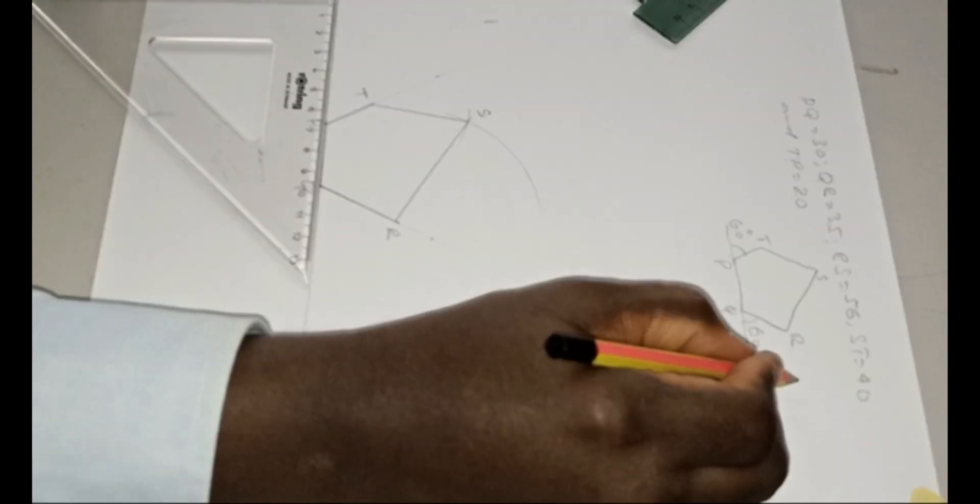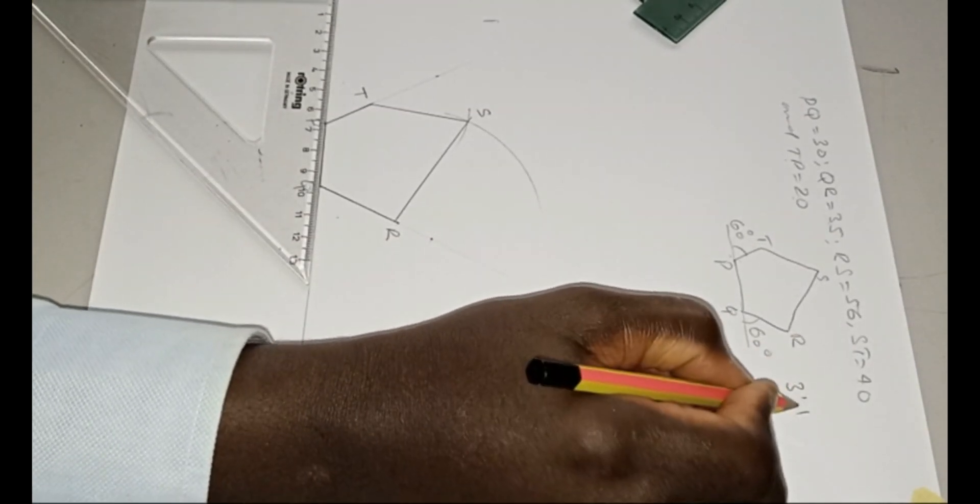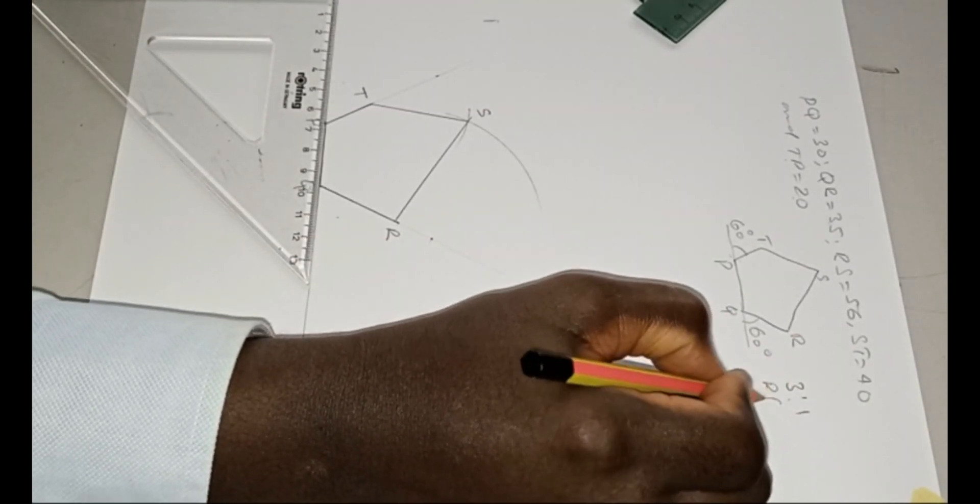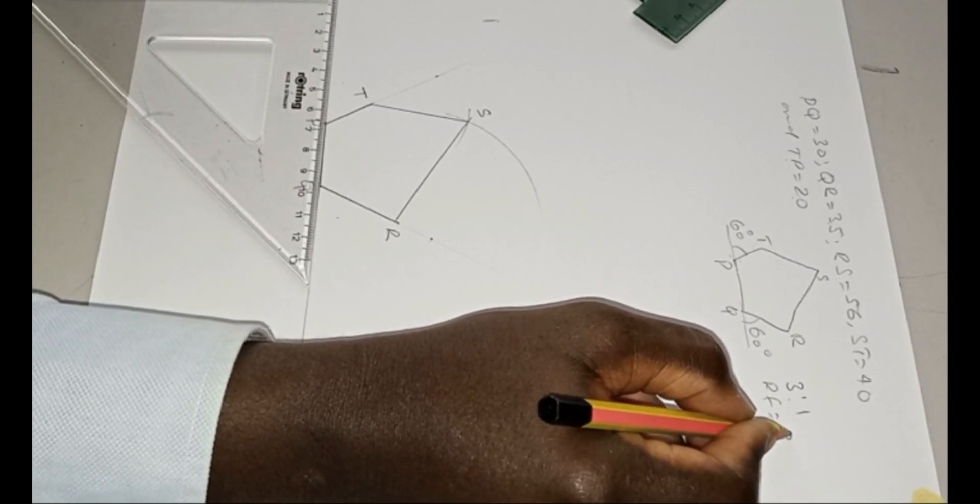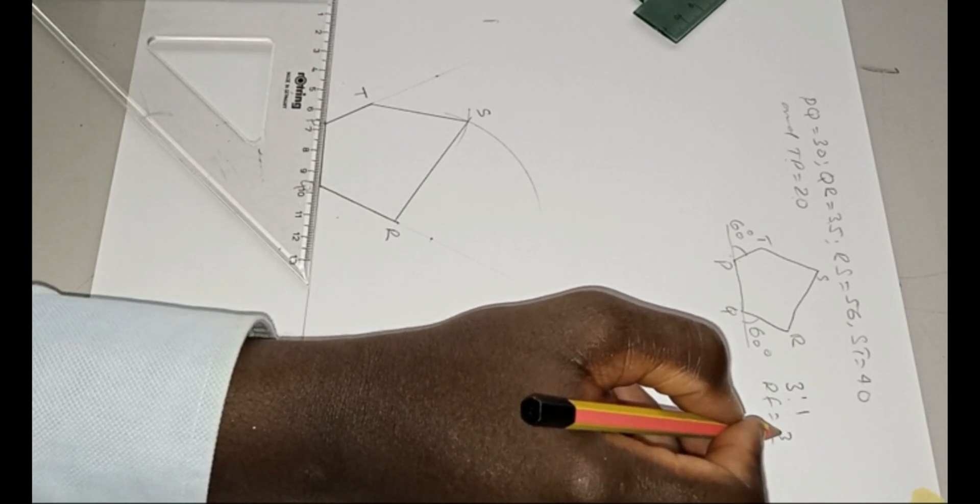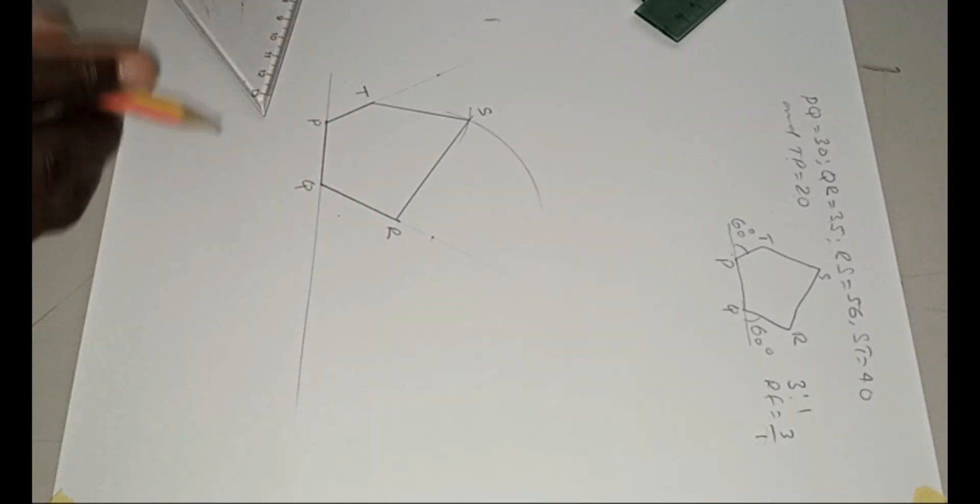So the next is to now enlarge it to three times the actual size. Now when you are given ratio 3 to 1, the RF will be 3 over 1. So 1 is the actual size. 3 is the new size I want to enlarge it to.